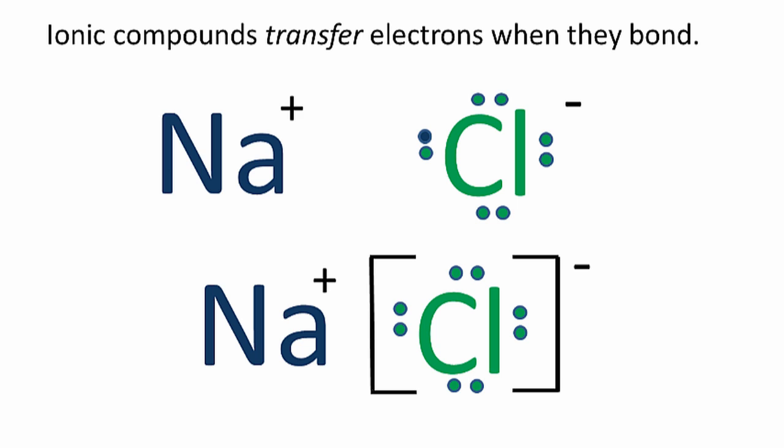So we'll have the positive on the sodium. We'll put the chlorine in the brackets with all eight electrons now and a negative sign. So that's the Lewis structure for NaCl. The chlorine has an octet, but what about the sodium?